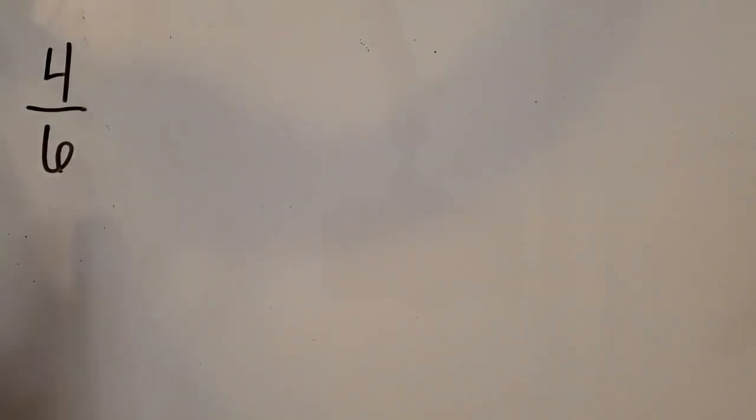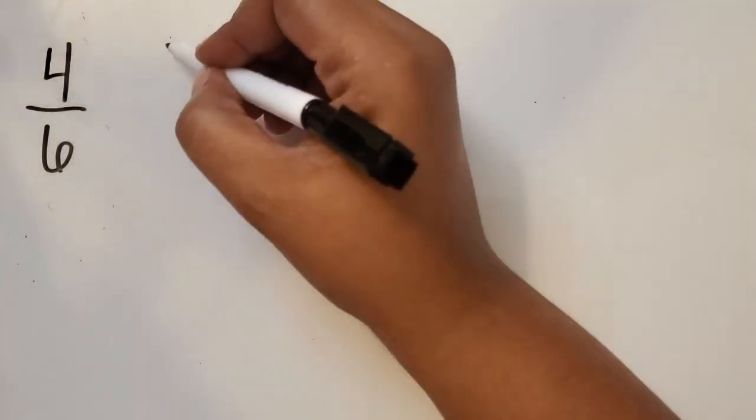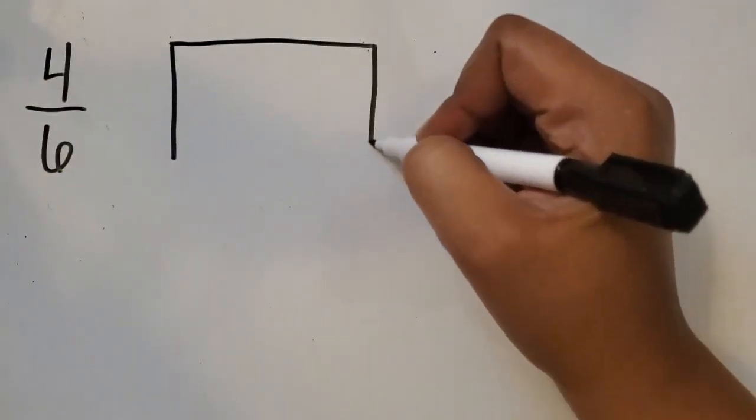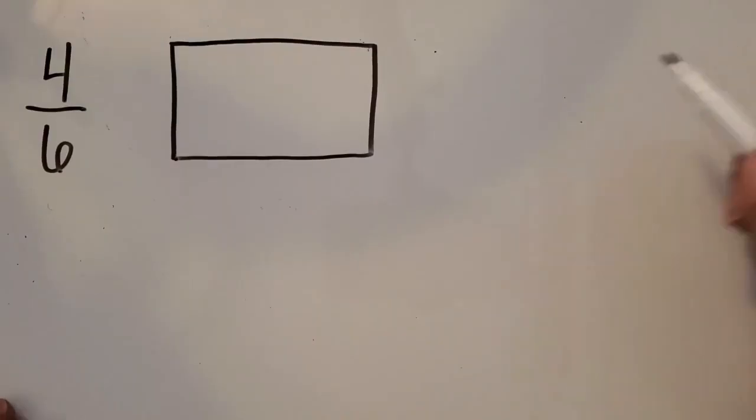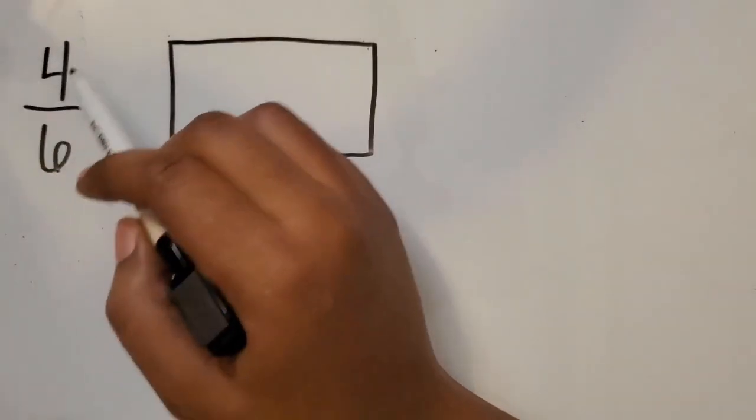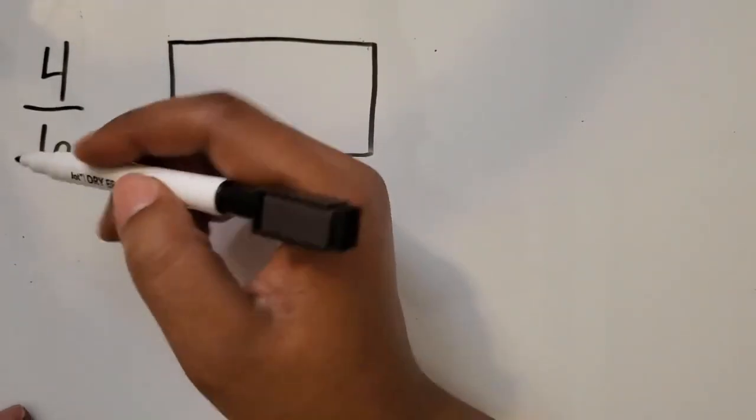We're going to represent the fraction 4/6 using a rectangular area model. So we're going to start out by drawing a rectangle to represent the whole. Now I'm going to look at the fraction. The fraction symbol here, we have 4 as our numerator and 6 as our denominator.